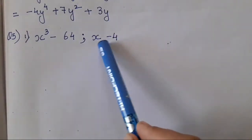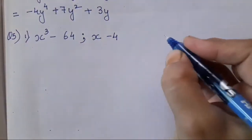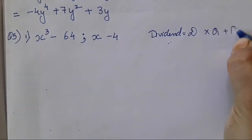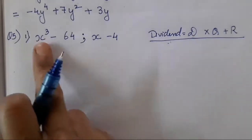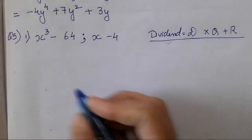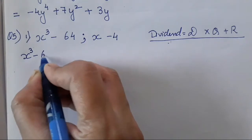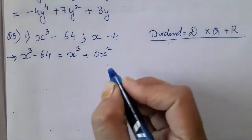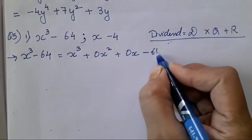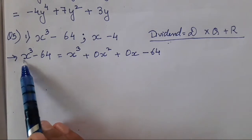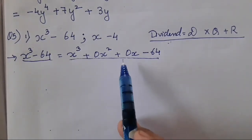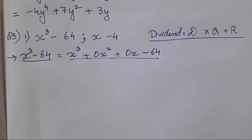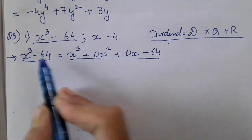In this question we have to divide these two polynomials, and then we have to write it in the form: dividend equals divisor into quotient plus remainder. So we have to write after solving the polynomials in this form also. First, x³ minus 64 is equal to x³ plus 0x² plus 0x minus 64. What we have done is written this equation in index form of polynomial — according to the power, we have written each term.